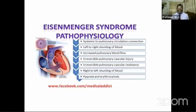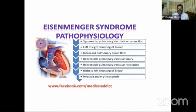Eisenmenger syndrome pathophysiology: there is an abnormal systemic-to-pulmonary circulation connection — shunting between the two sides. Left-to-right shunting increases pulmonary blood flow, causing irreversible pulmonary vascular injury, irreversible pulmonary vascular resistance, and then right-to-left shunting, which develops hypoxia and erythrocytosis.